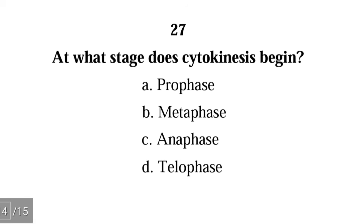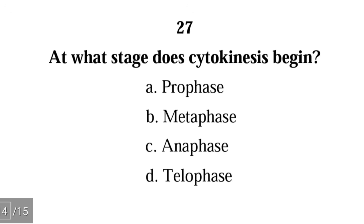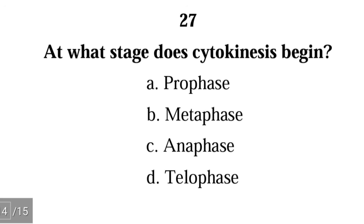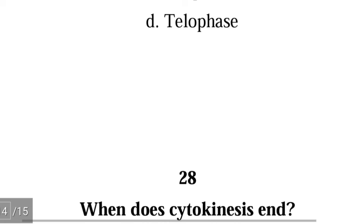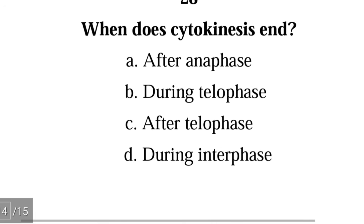Question 27: At what stage does cytokinesis begin? A) prophase, B) metaphase, C) anaphase, D) telophase. The correct answer is C) anaphase — cytokinesis begins at anaphase.